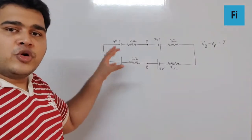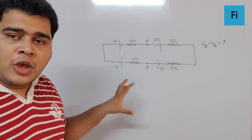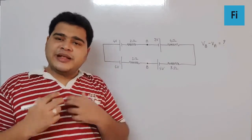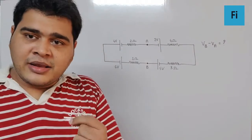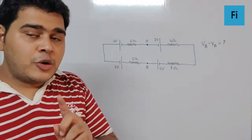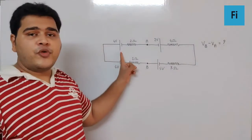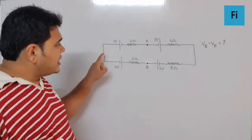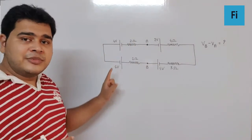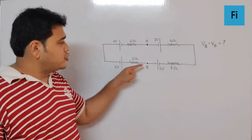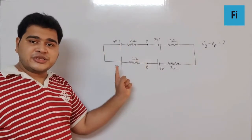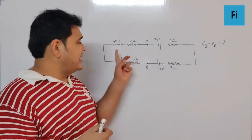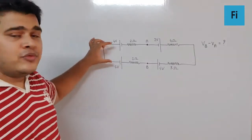Looking at the diagram carefully, there are four batteries and four resistances. First, we need to find the net EMF and net resistance to find the current's magnitude and direction. The 4V battery wants current to flow anti-clockwise, and the 6V battery also wants current to flow anti-clockwise. These two cells are in series and same mode, so E1 and E2 add up to 10V.